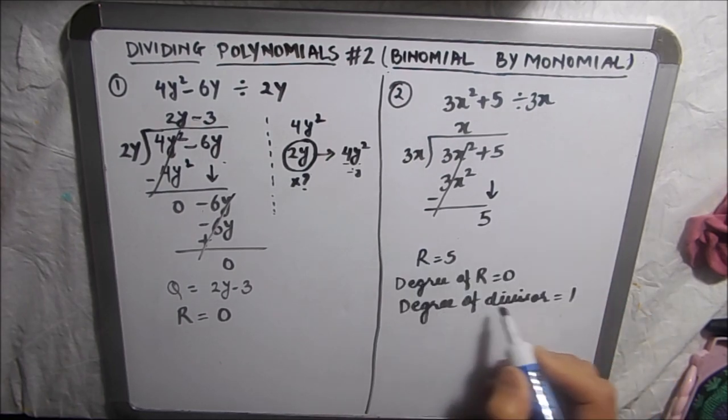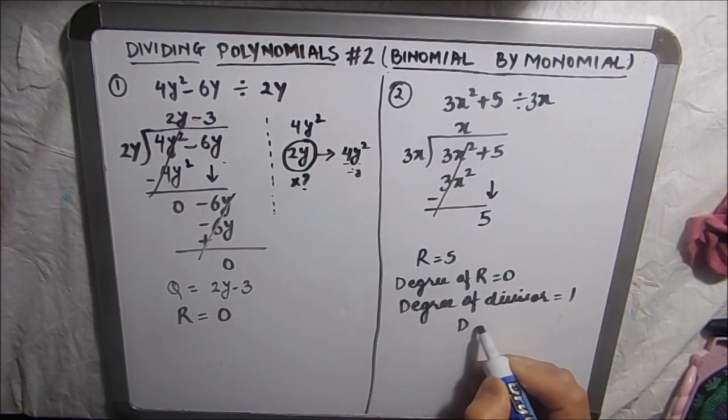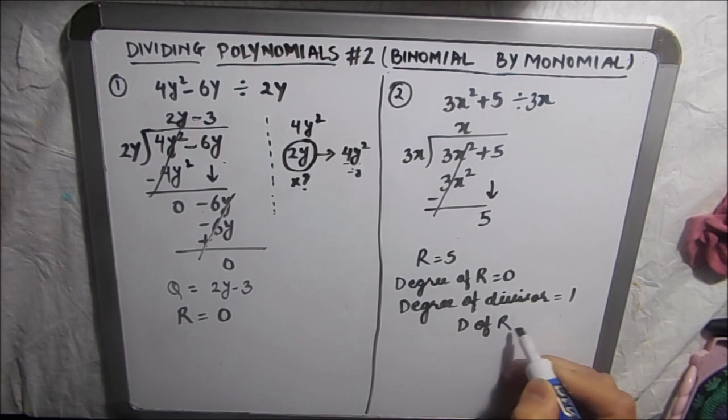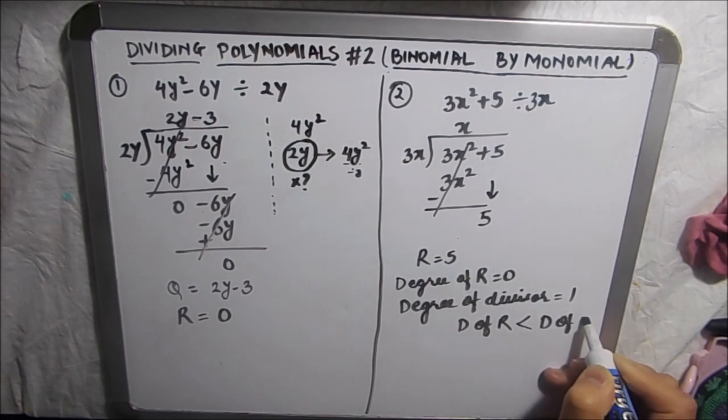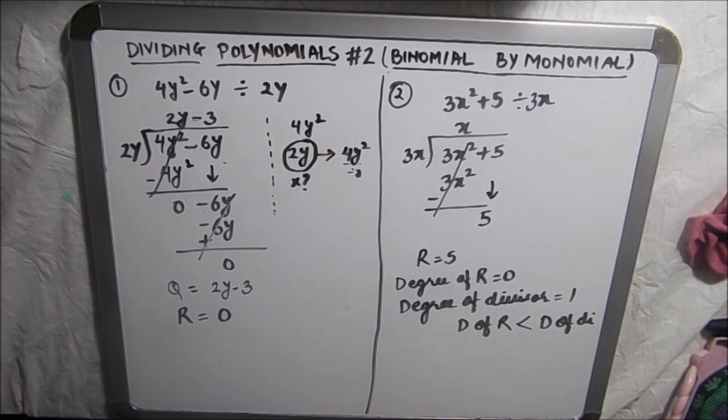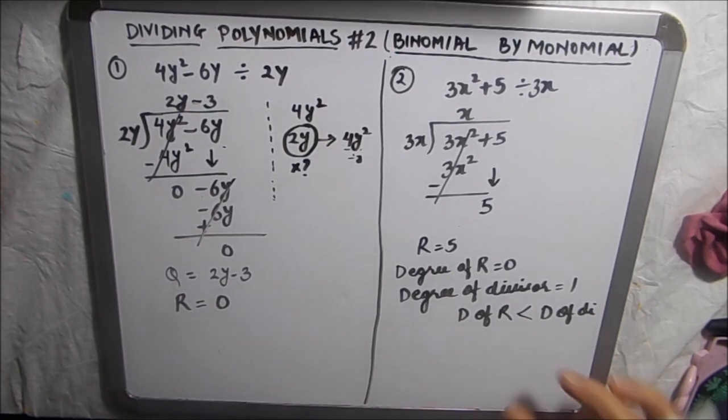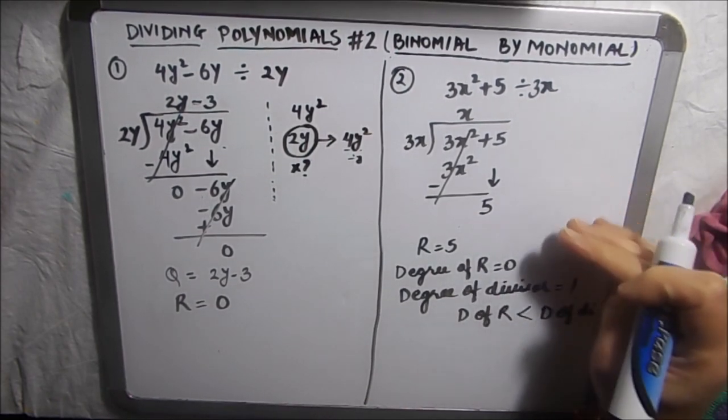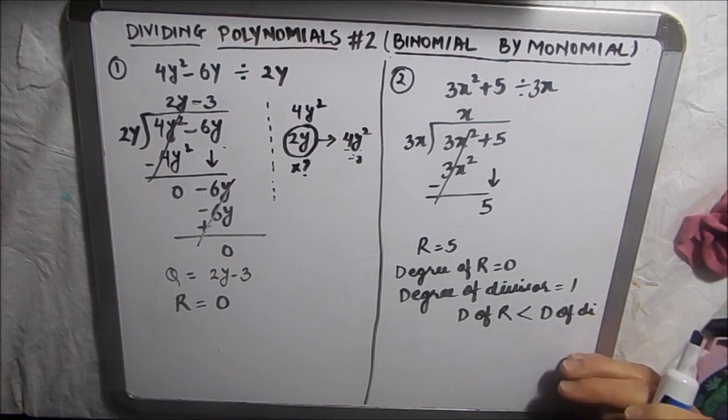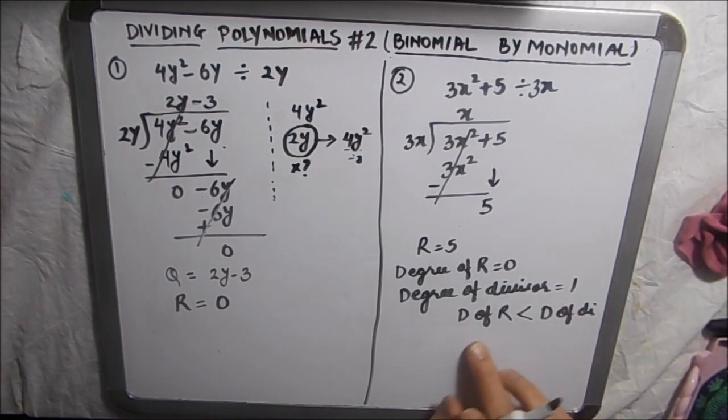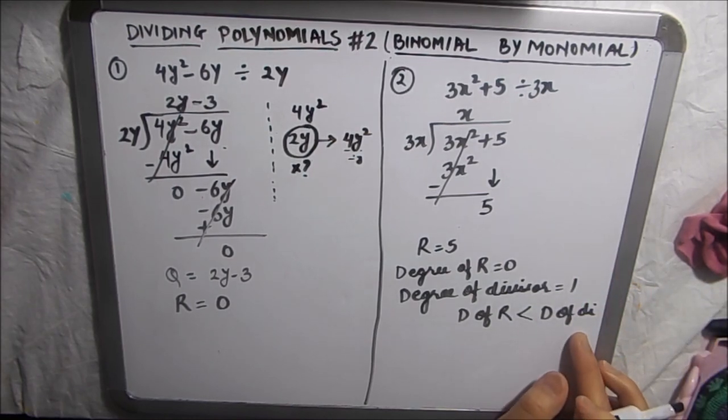So we have to check that the degree of remainder should always be less than the degree of divisor. Then only we can stop. Otherwise if the terms are big we cannot stop. We have to continue dividing the number until we get the degree of remainder less than the degree of divisor.